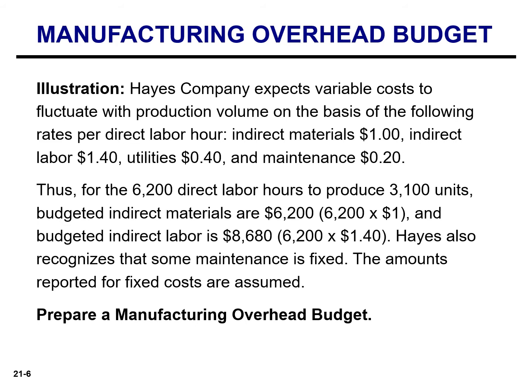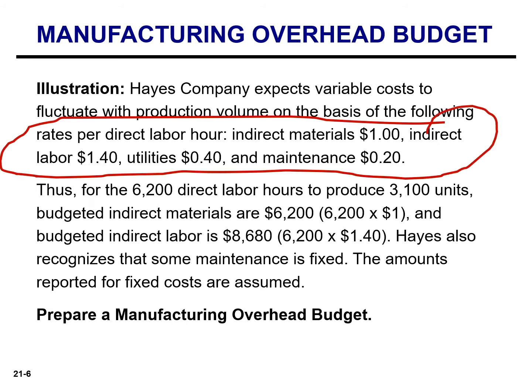Indirect materials is $1, indirect labor is $1.40, utilities is $0.40, and maintenance is $0.20. If the company uses 6,200 direct labor hours to produce 3,100 units, budgeted indirect materials are $6,200. That is calculated by taking the direct labor hours of 6,200 and multiplying by $1.